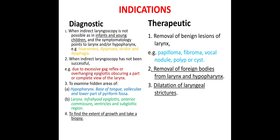When indirect laryngoscopy has not been successful, for example due to excessive gag reflex or overhanging epiglottis obscuring a part or complete view of the larynx, and to examine hidden areas of the hypopharynx such as the base of tongue.